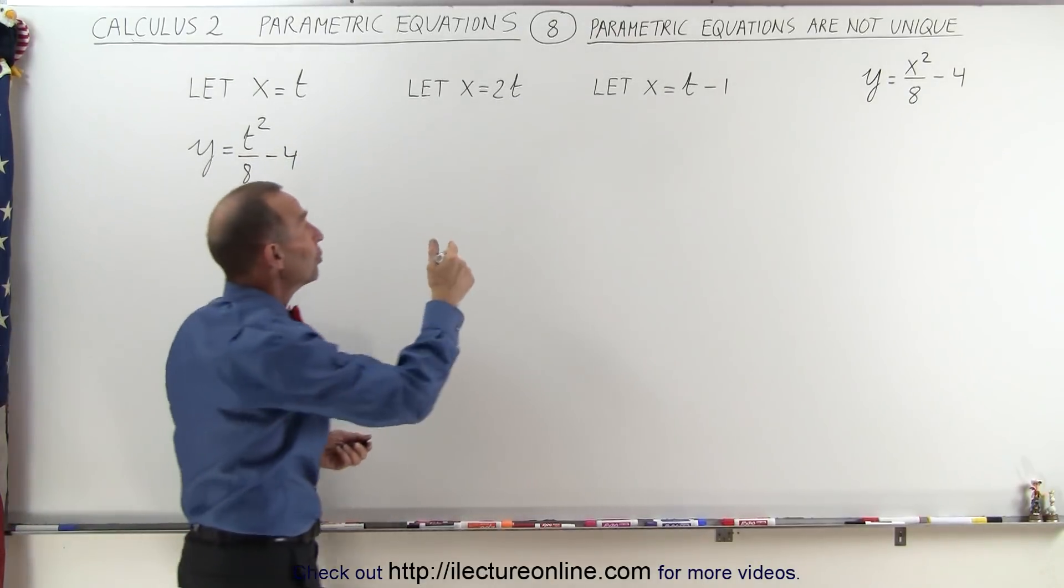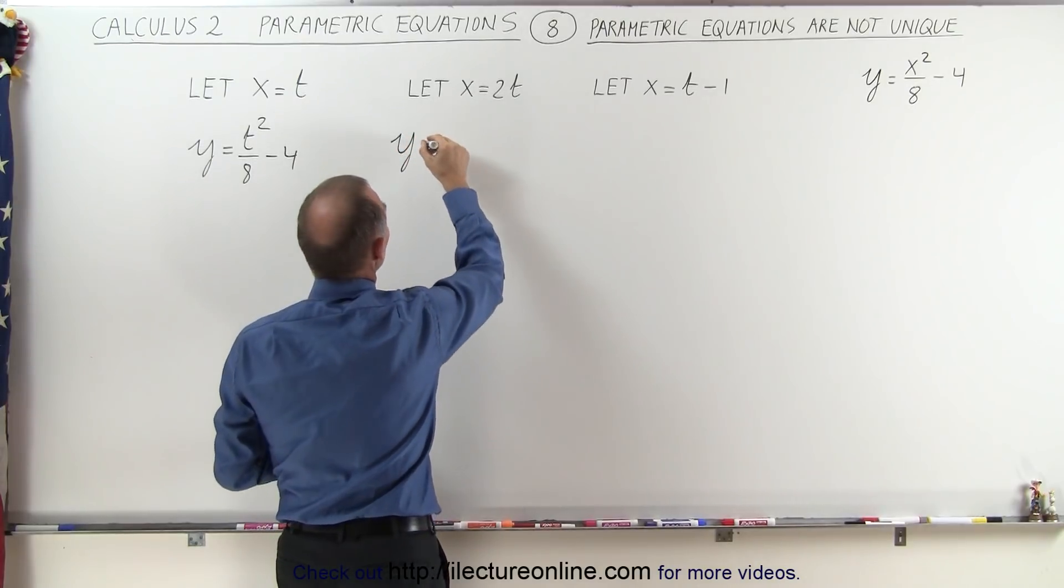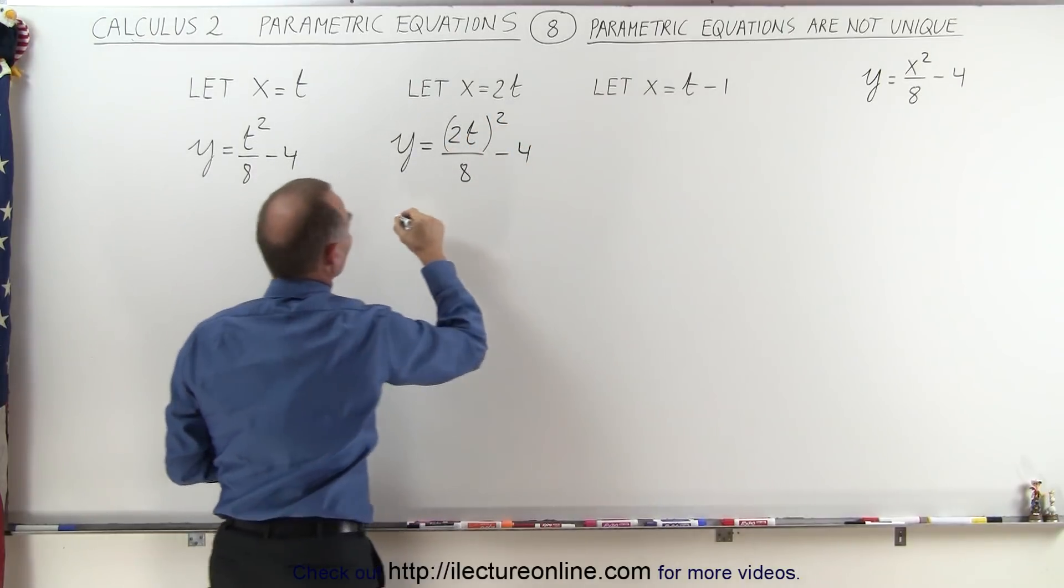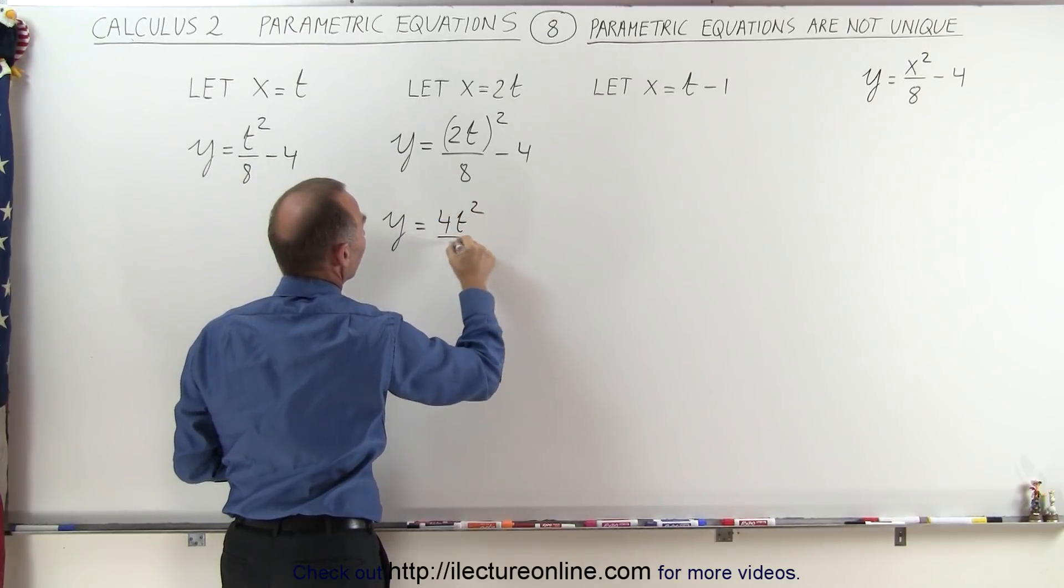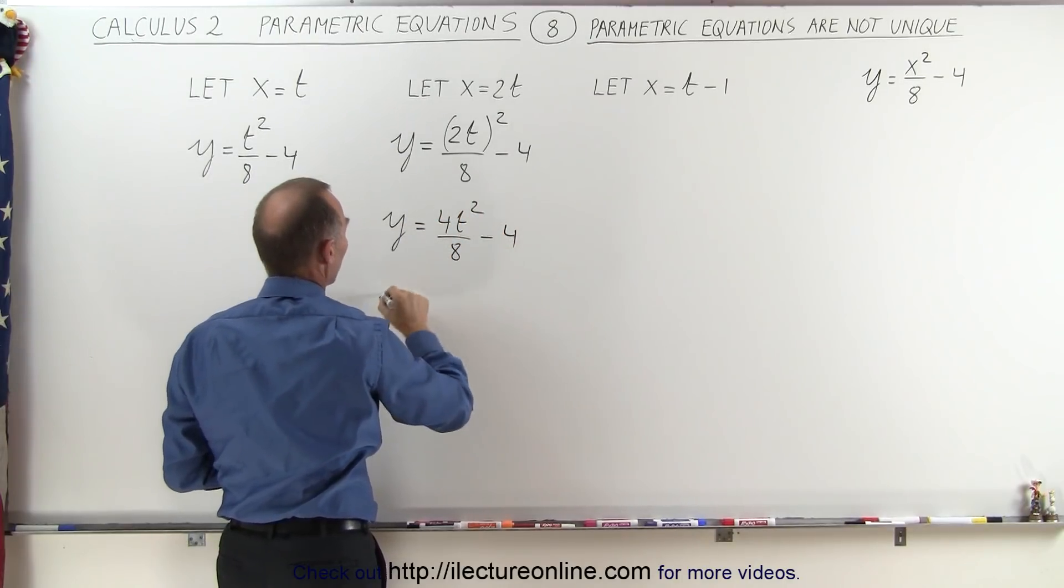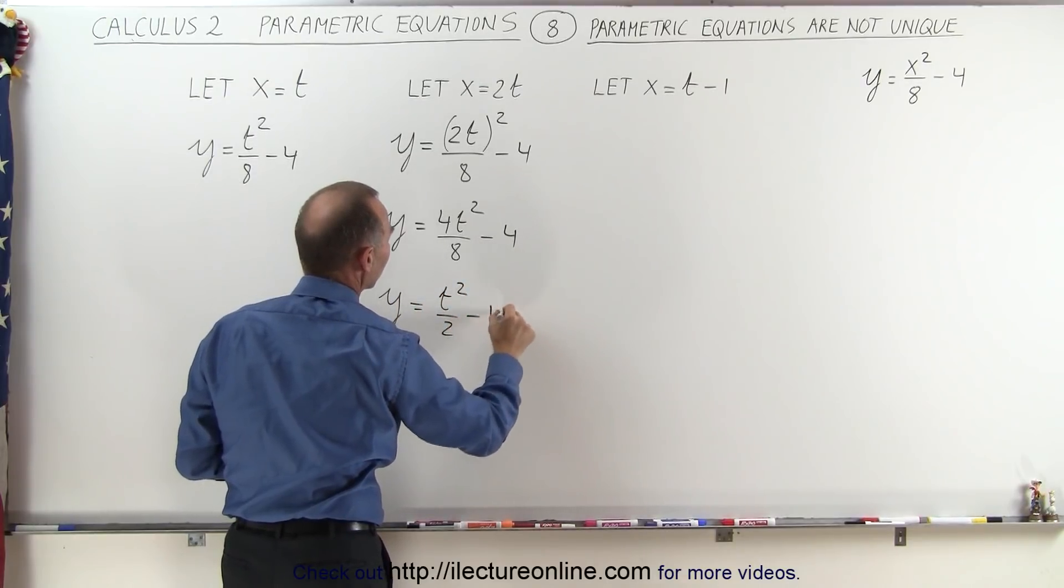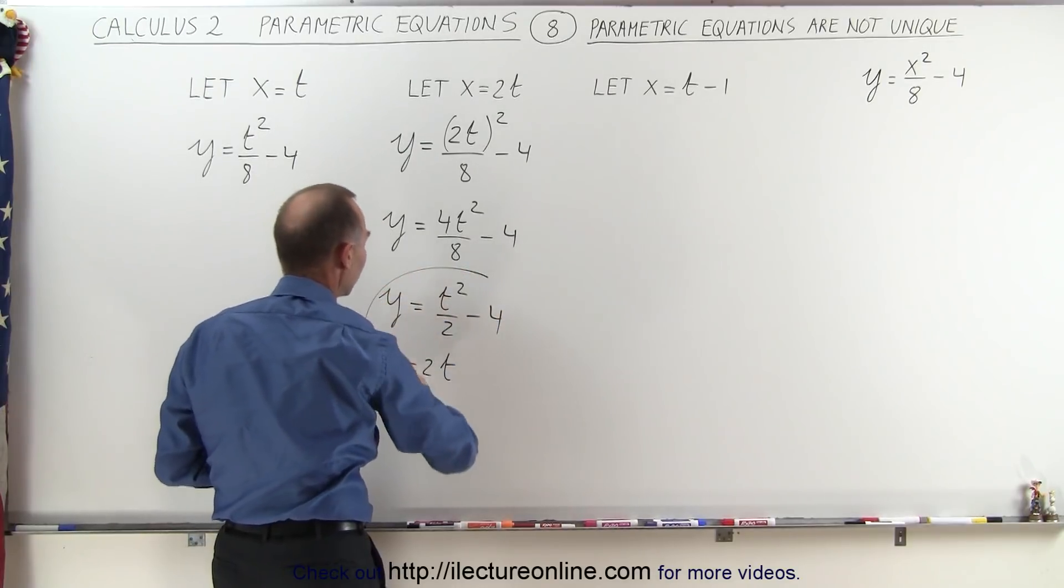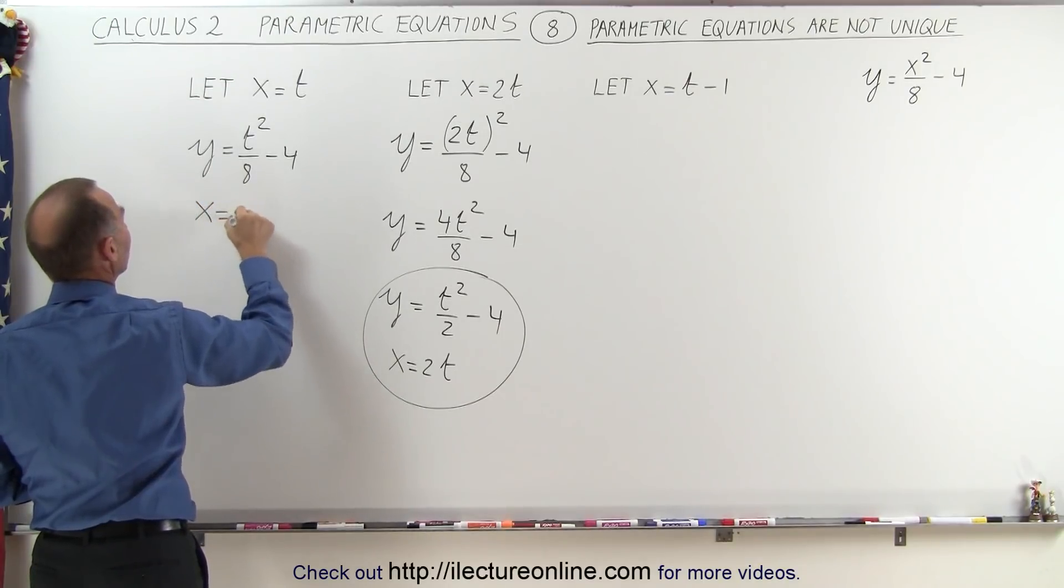What if x = 2t? Then we replace every x by 2t in the equation, and we get y = (2t)²/8 - 4, so that means y = 4t²/8 - 4, or y = t²/2 - 4. So that pairs up with x = 2t, and you can see that this is a different set of parametric equations than the one where we have x = t.